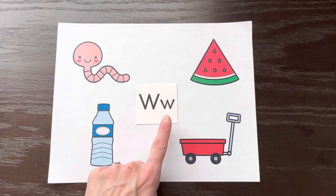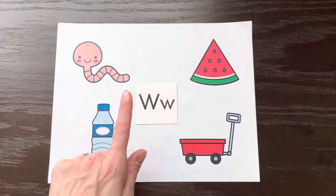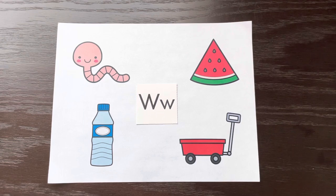This is a capital W and this is a lowercase w. They look exactly the same. One is bigger and one is smaller. Here are some words that start with the letter W.